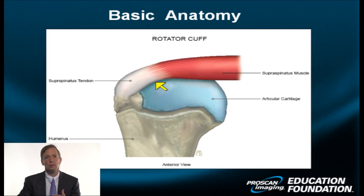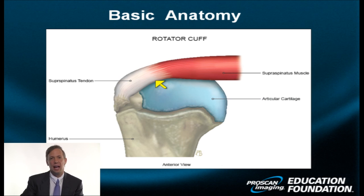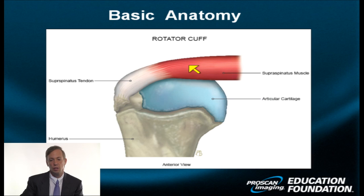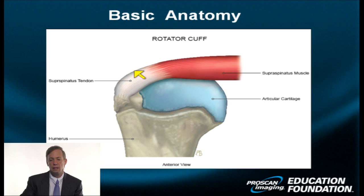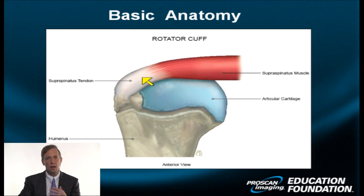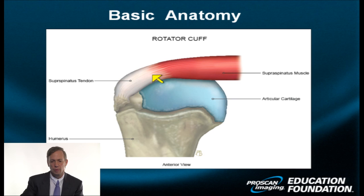Now let's take a more anatomic and less diagrammatic approach, even though this is a diagram — but a truer representation of what a portion of the rotator cuff might look like. Again, we've selected the supraspinatus. We see the muscle and muscle fibers, the myotendinous unit and how they mix together. The muscle fades away, the tendon becomes more prominent, and the tendon is composed of a number of tendon fibrils or subunits. It makes an arcuate turn to insert on the footplate or footprint.